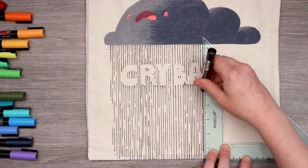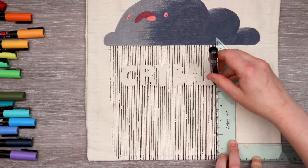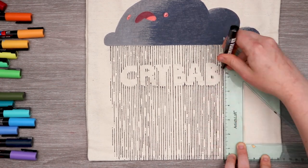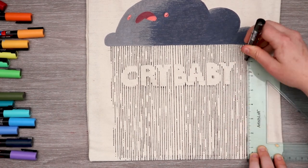And I just lined some rain in there and in the negative space we have crybaby. I think this one turned out so cool. It's probably the most perfect idea for a tote bag. I love it. It's great. One of my faves.